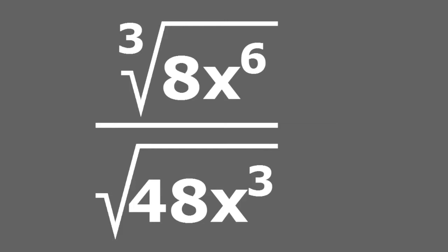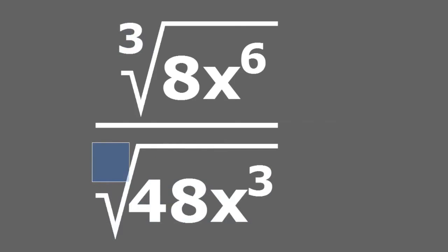For this simplification we have roots on the numerator and roots on the denominator, but one is a cube root and the other is a square root. The numerator is the cube root of 8x to the sixth power and the denominator is the square root of 48x to the third power.